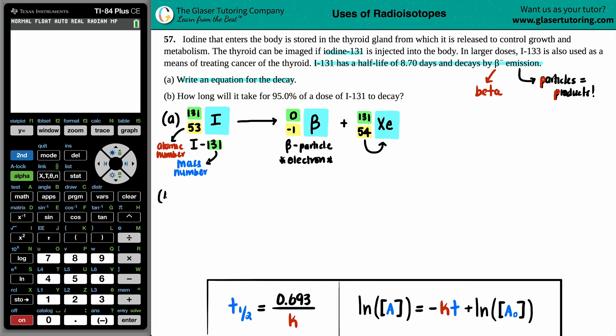Now let's move on to letter B. Letter B says, how long will it take for 95% of a dose of I-131 to decay? All right. So how long? Anytime that you're asking how long something is, they're always looking for some type of time value. So I know that my variable that I'm looking for is lowercase t, a general time.